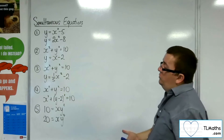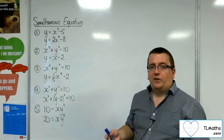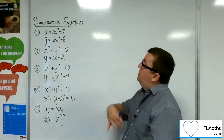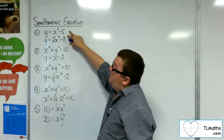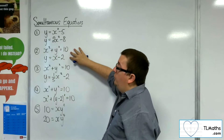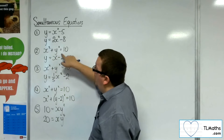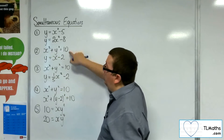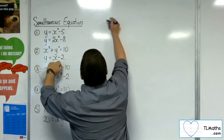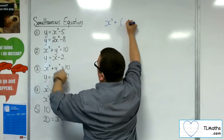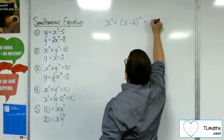Looking at number 2, we've got the circle x squared plus y squared equals 10, and the straight line y equals x minus 2. We're not in the case where we have y equals y equals, so the easiest approach is to substitute the second equation — y equals x minus 2 — into the first one. The y in the circle equation can be replaced with x minus 2.